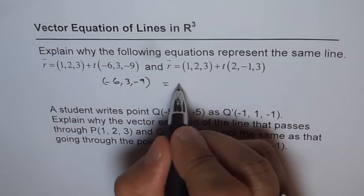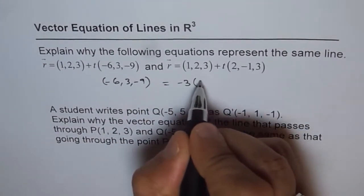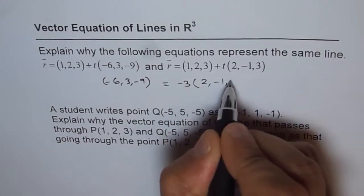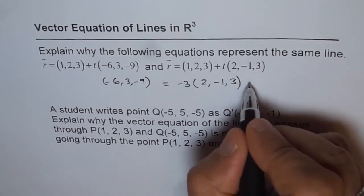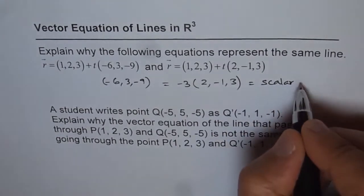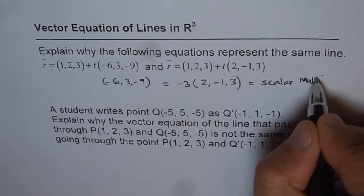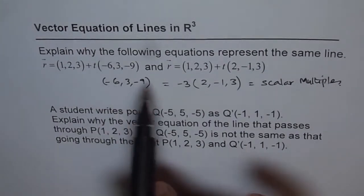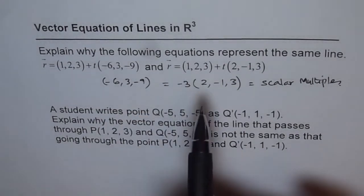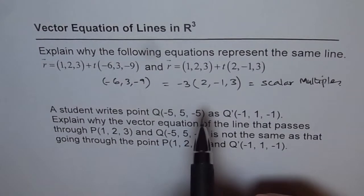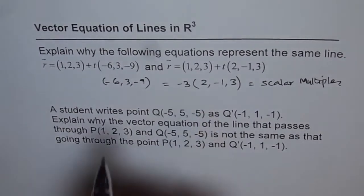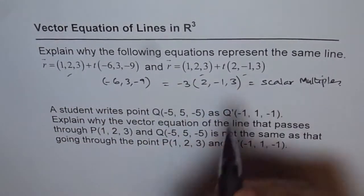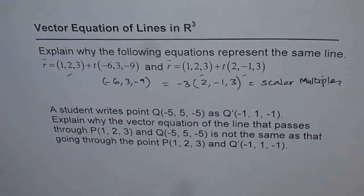They are related. Basically -3 times (2, -1, 3). So they are scalar multiples. That means same direction. So we have these two lines with same direction and same point. So they are indeed representing the same line.